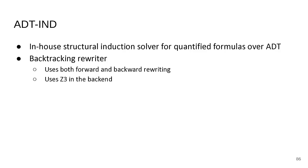Forwards rewriting is the intuitive notion — you take a goal and simplify it using a fixed set of rules. Backwards rewriting, on the other hand, modifies the list of rules so that the forwards rewriting process isn't as constrained in the future.